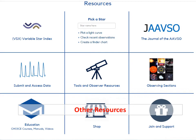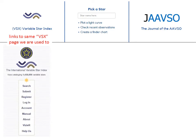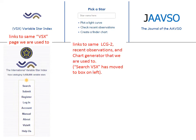The next few slides show the second level down links in each of the resource boxes. Along the top row, the resource boxes link to the variable star index page that you already know, the Pick a Star app that you already know to plot light curves, see recent observations, and create a finder chart for a star of interest, and the Journal of the AAVSO page that you were used to.